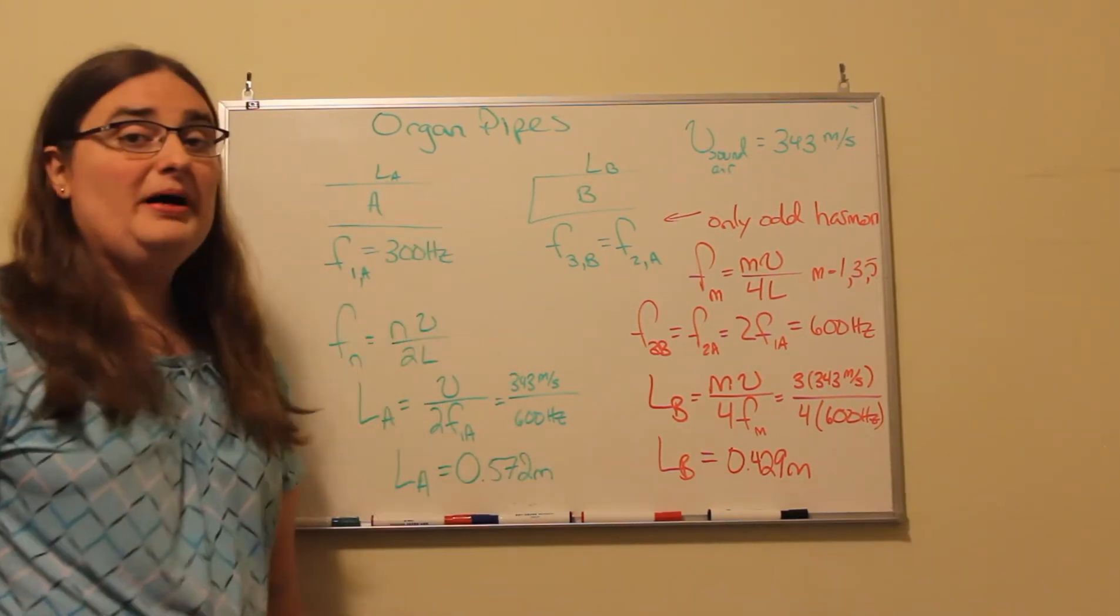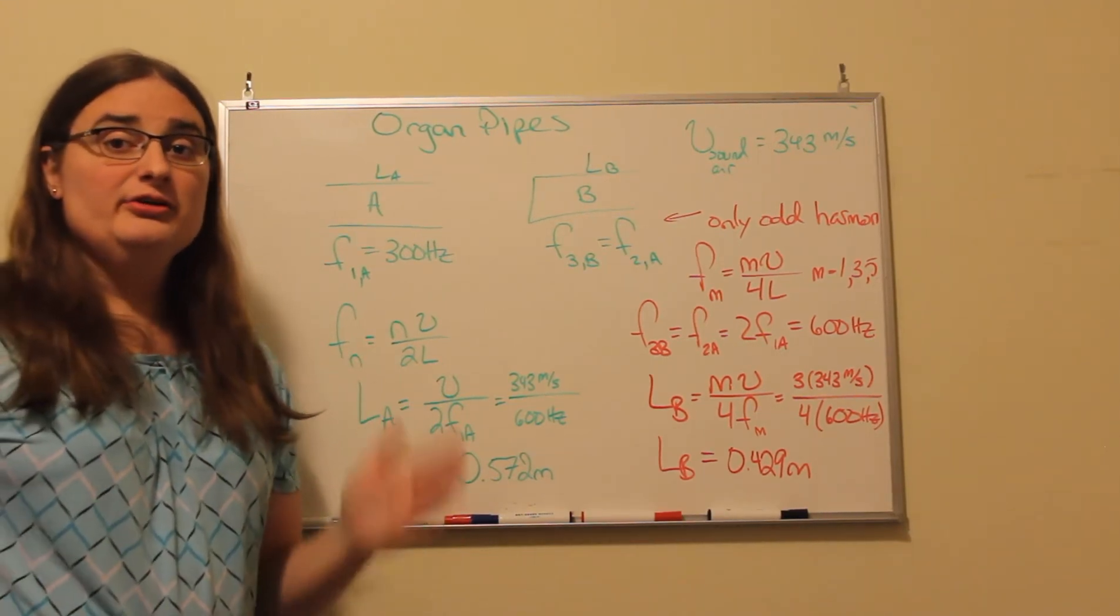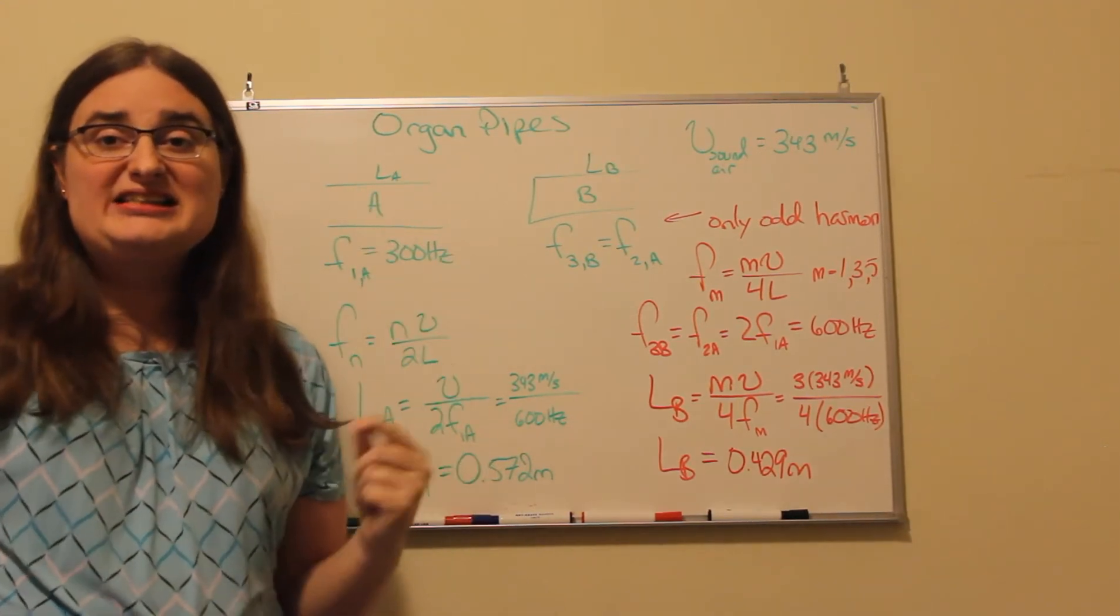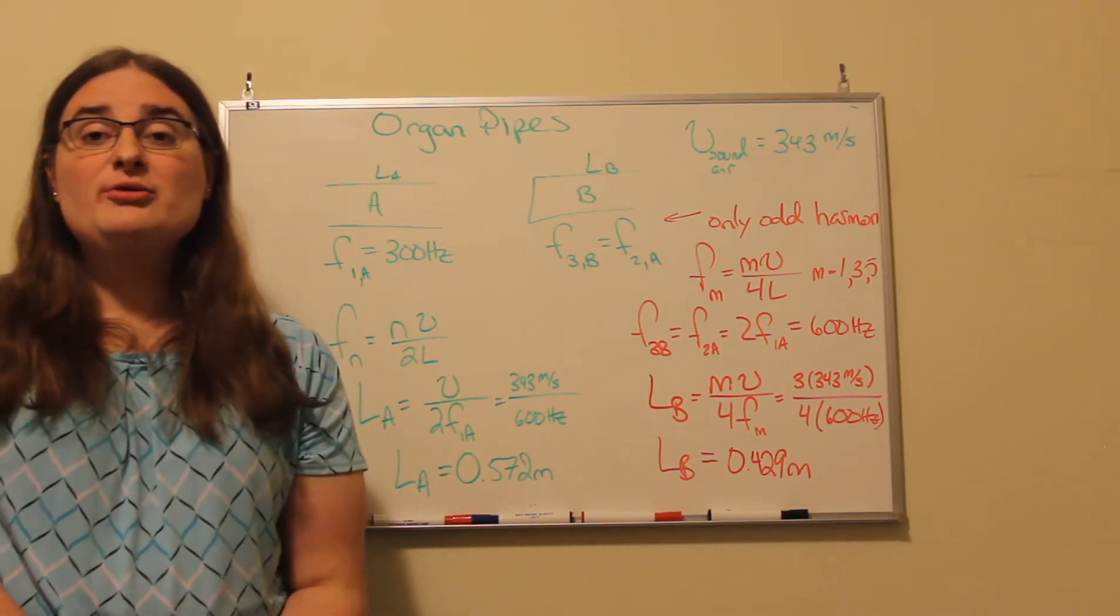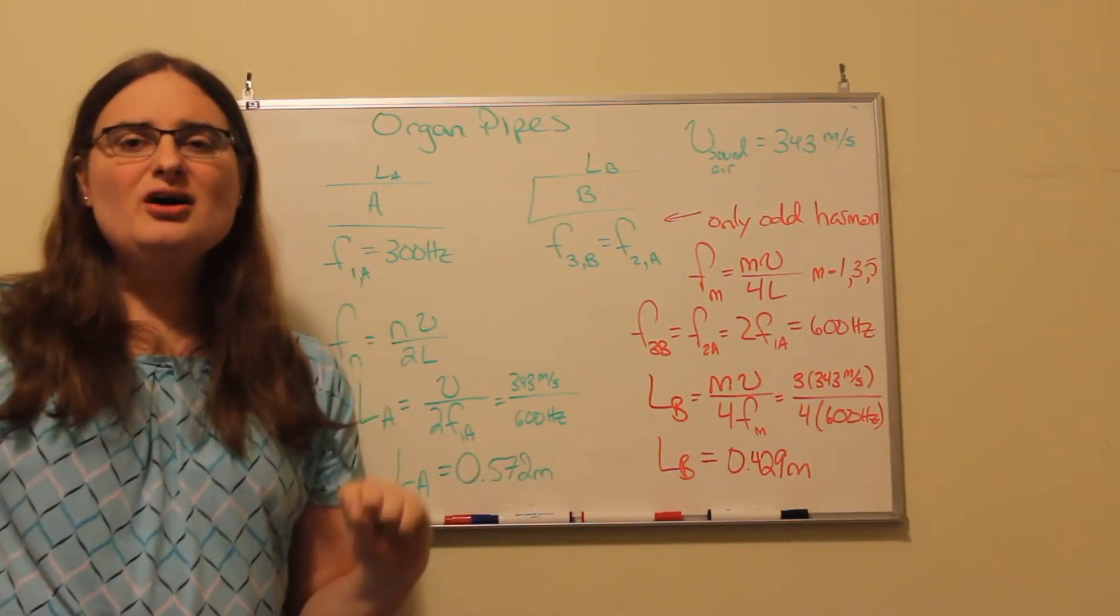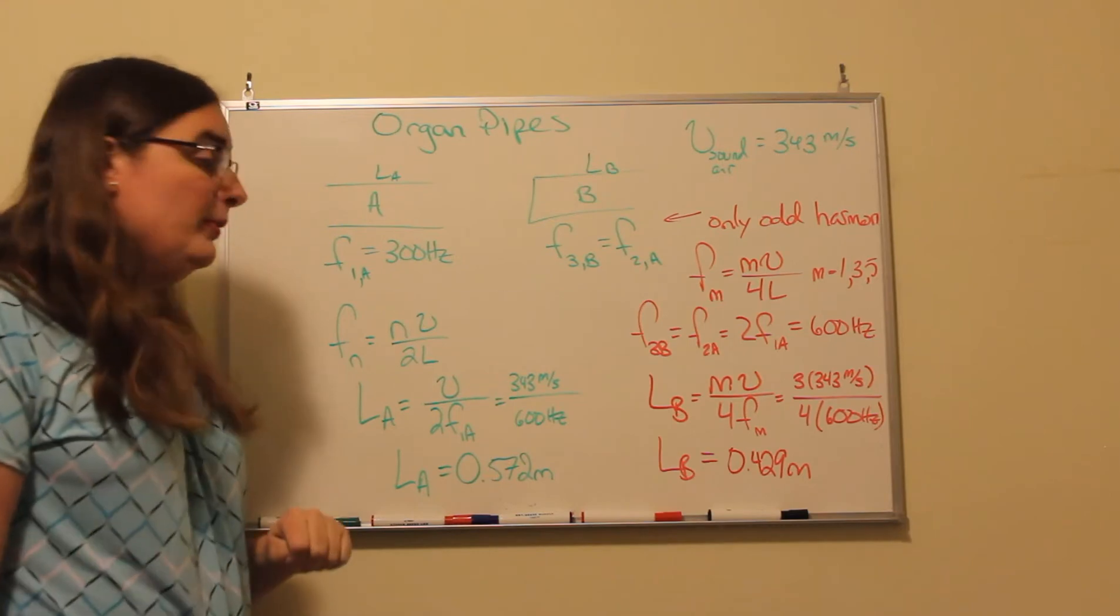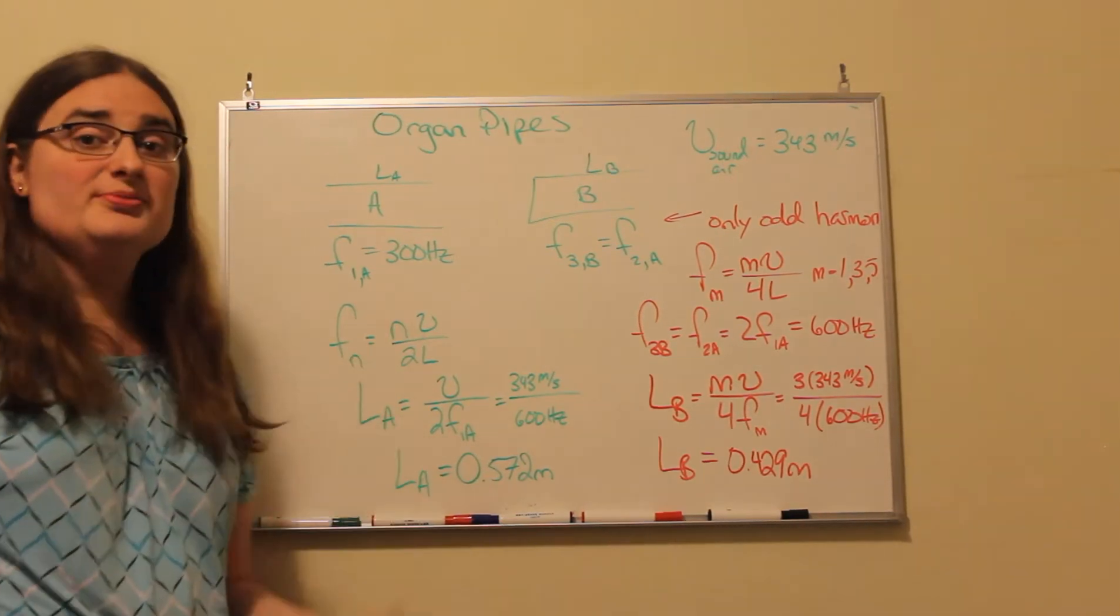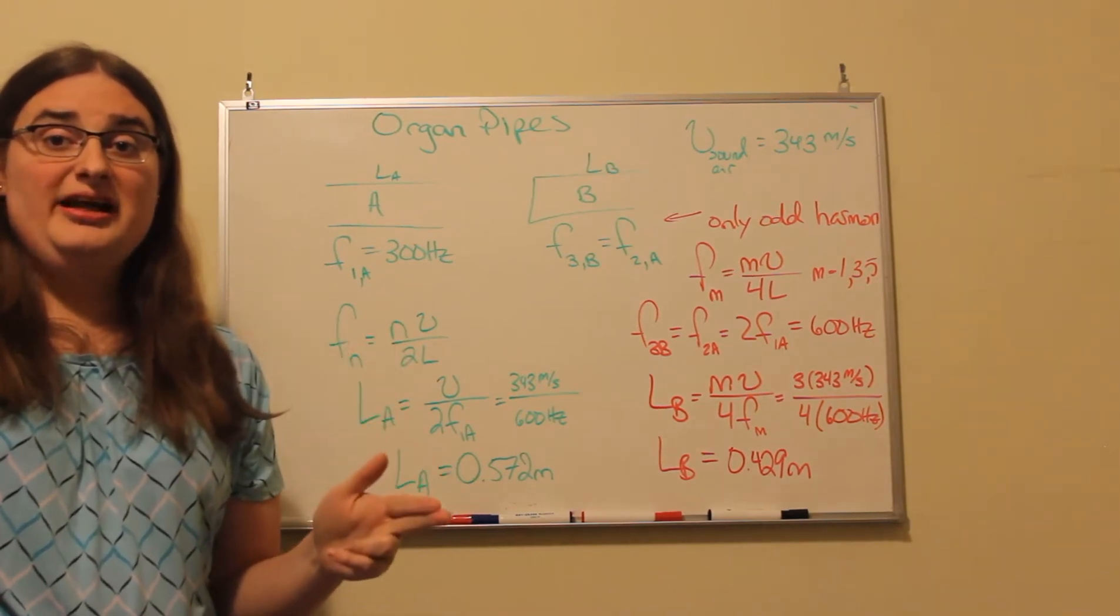So with an open-open pipe, we have a half wave resonator, which means we can fit an integer number of half waves inside the pipe. So we're told with this pipe that our fundamental frequency is 300 Hertz. The fundamental frequency is the lowest frequency that will trigger a resonance. So for open-open pipes, the wave pattern that we see in terms of frequency is the same as what we see for strings that are clamped on both ends.